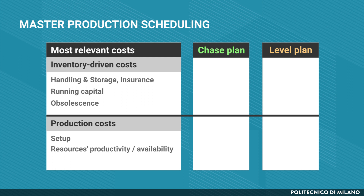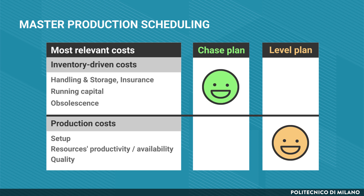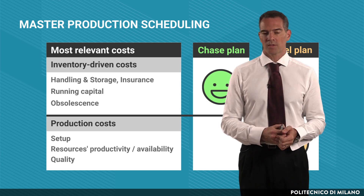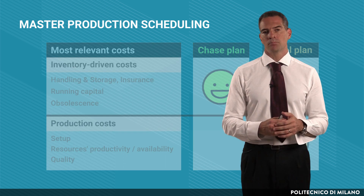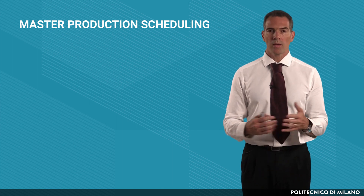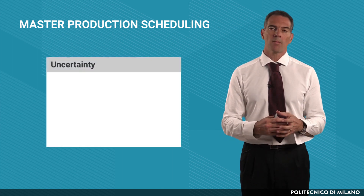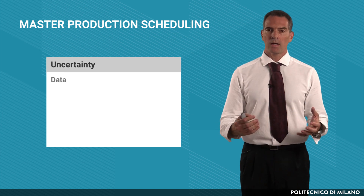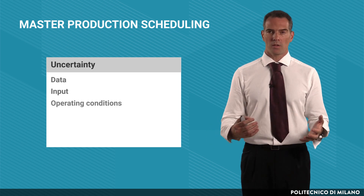Not to forget quality issues. If we compare the chase approach and the level approach with respect to these two cost items, we see that the level approach is much more useful when you want to mitigate production costs, while the chase approach is much more useful when you want to control and reduce stock holding costs. In any real planning problem, you also have to consider uncertainty which may affect your data, input, and operating conditions.